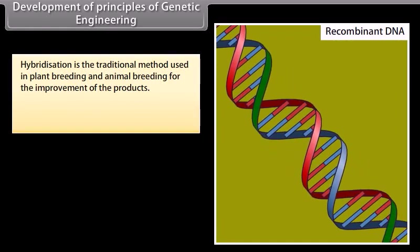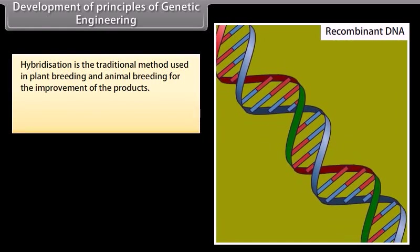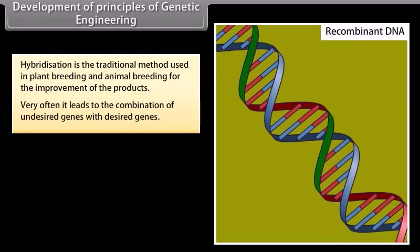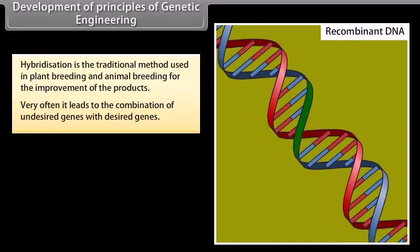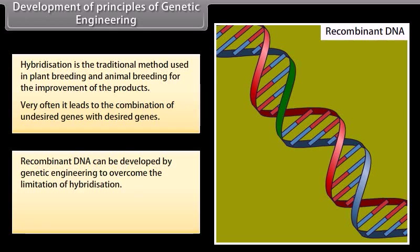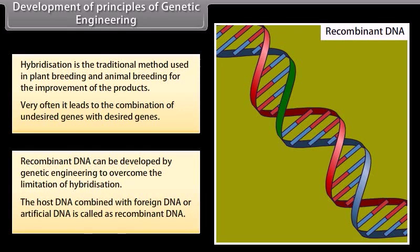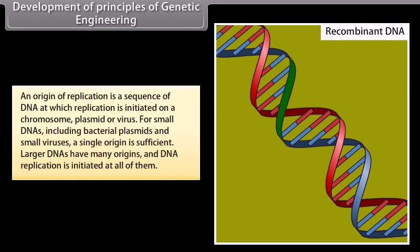Development of principles of genetic engineering: Hybridization is the traditional method used in plant and animal breeding for improvement of products. Very often it leads to the combination of undesired genes with desired genes. Recombinant DNA can be developed by genetic engineering to overcome the limitation of hybridization. The host DNA combined with foreign DNA or artificial DNA is called recombinant DNA. An origin of replication is a sequence of DNA at which replication is initiated on a chromosome, plasmid, or virus. Larger DNAs have many origins and DNA replication is initiated at all of them.